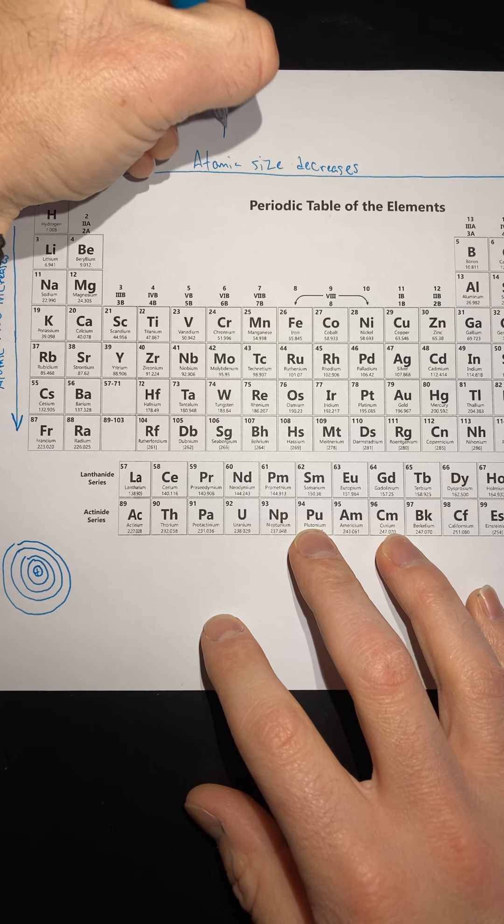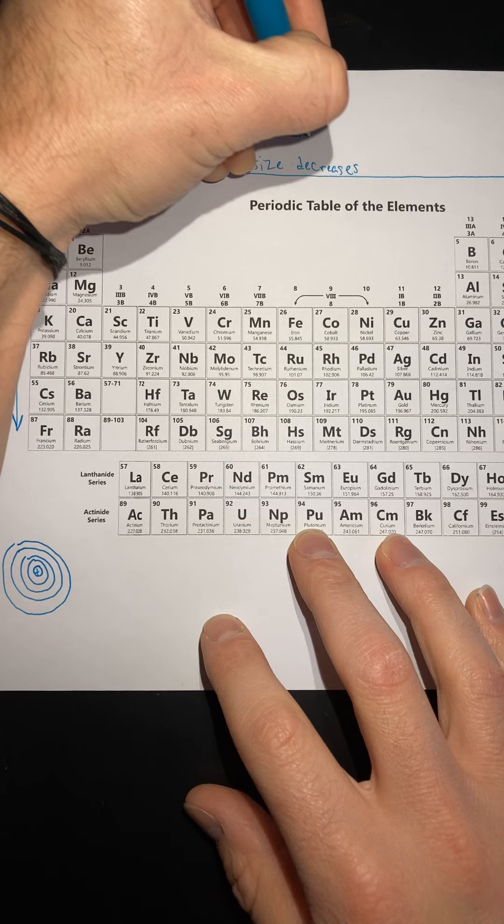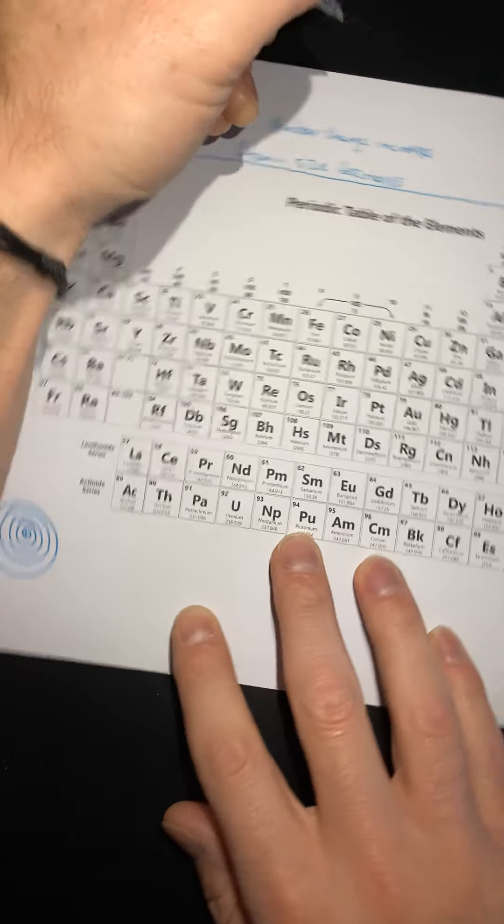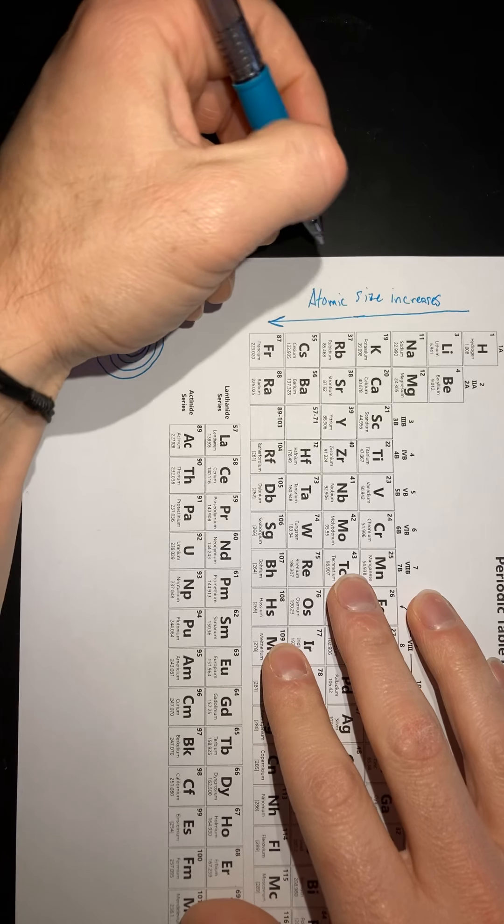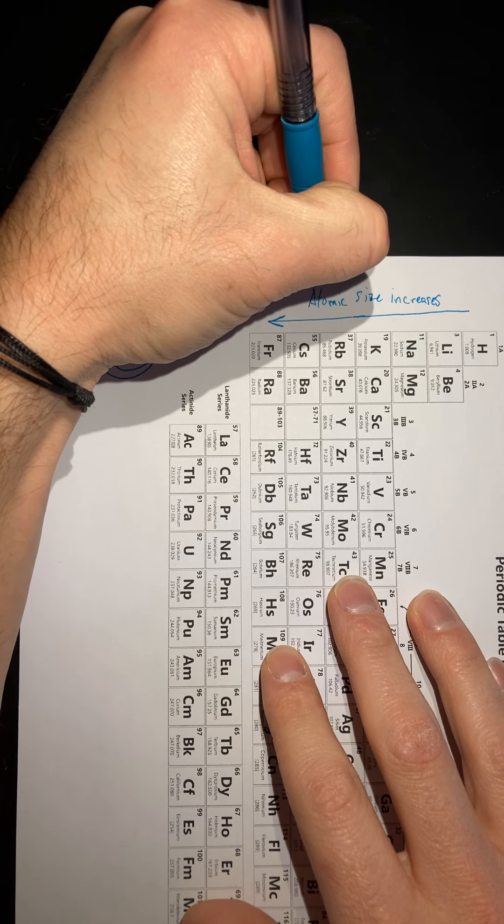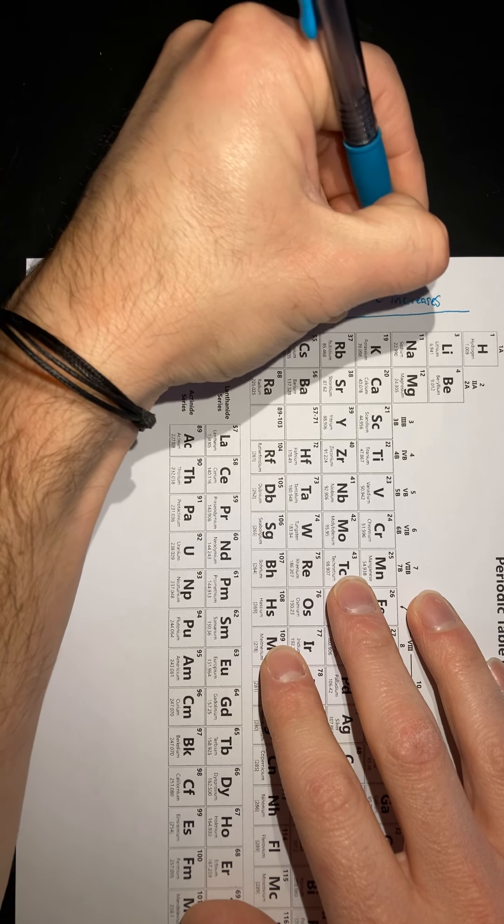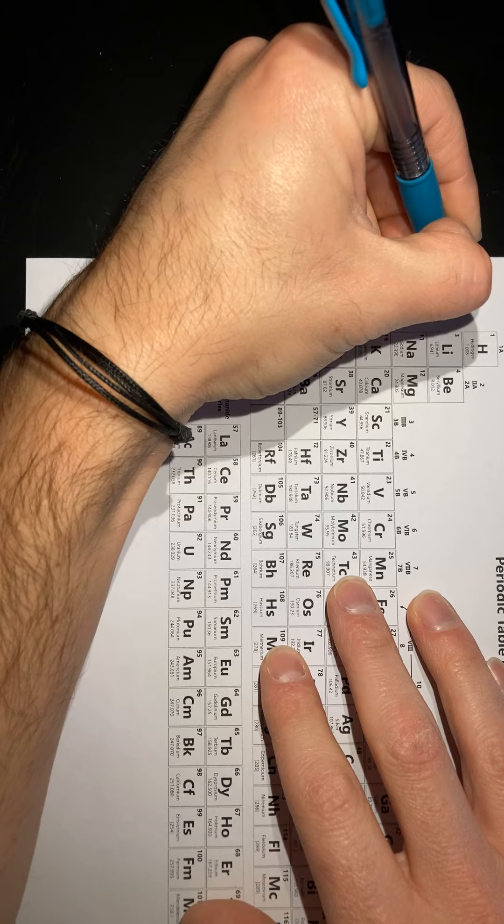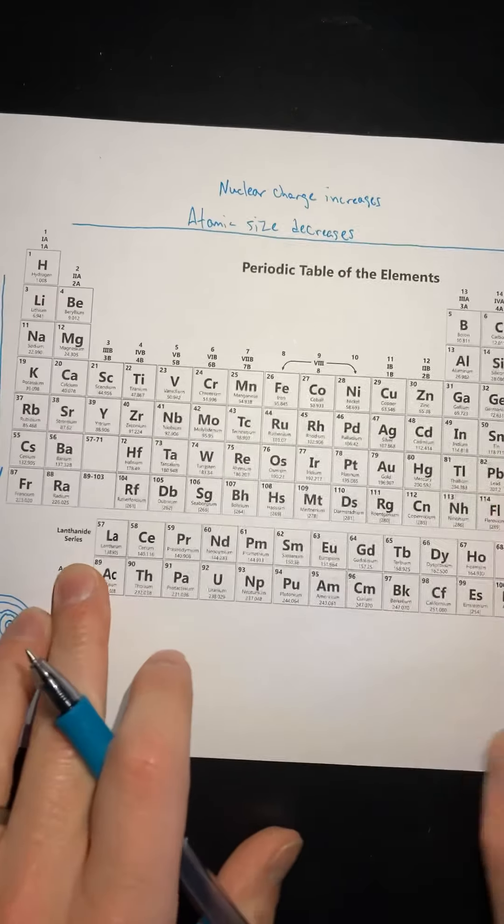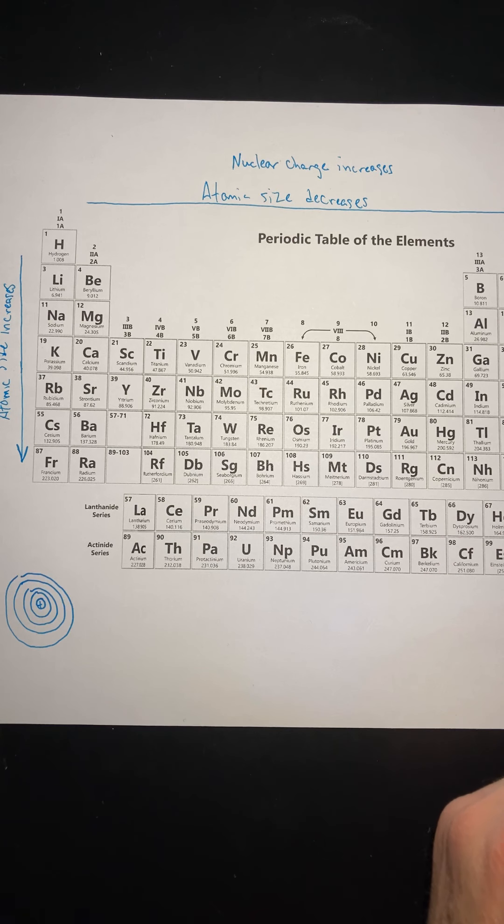And if you want to label this, like nuclear charge increases, you can do that. And then, as you go down the groups, or down the column, I guess, the energy levels increase. All right. Is everybody with me so far? On the top? Yeah.